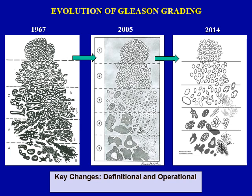Definitional changes recommend precise definition of each grade and how to grade morphologic variants of prostate cancer, while operational changes recommend how to grade in special circumstances. In this video, I am going to talk about the definitional aspect of prostate cancer grading; I will cover the operational aspect in a separate video. I would also recommend you check out a separate video I have made regarding the pitfalls of Gleason grading, which would be a good supplement to the current video.